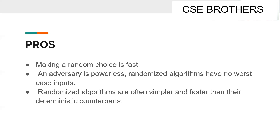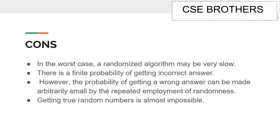Making a random choice is fast and an adversary is powerless against it. Randomized algorithms have no worst-case inputs, and are often simpler and faster than deterministic counterparts. In the worst case they may be slow, and there is a small probability of an incorrect answer, but this probability can be made arbitrarily small by repeated use of randomness. Generating true random numbers is almost impossible. This concludes the topic of Las Vegas algorithms.